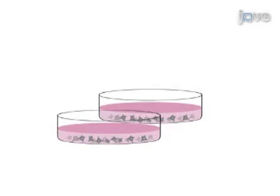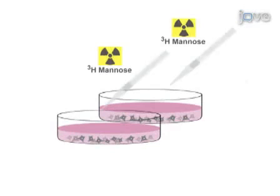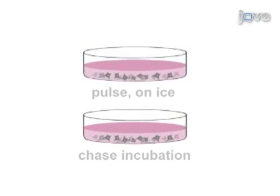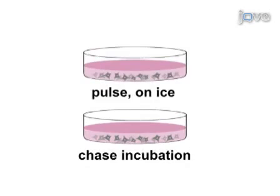Analysis of the N-linked sugar chains on glycoproteins starts with the labeling of the glycans in cells with tritiated mannose. The pulse dish is cooled on ice, while the chase dish is incubated with no label for a desired chase period.